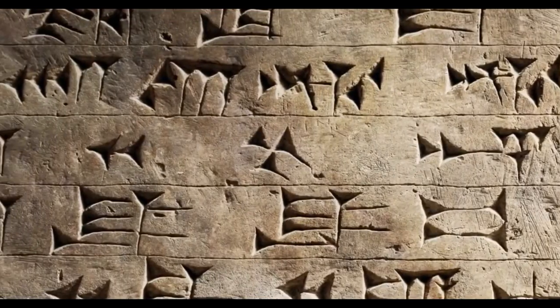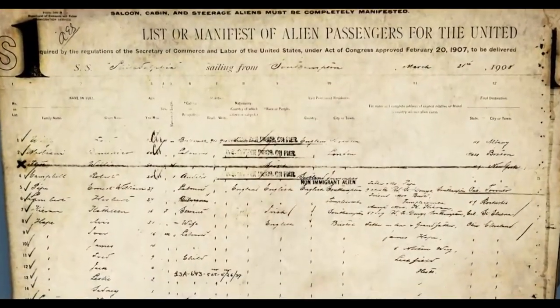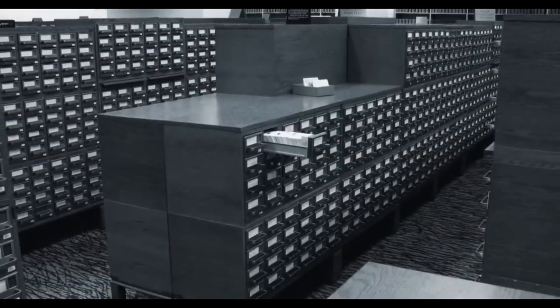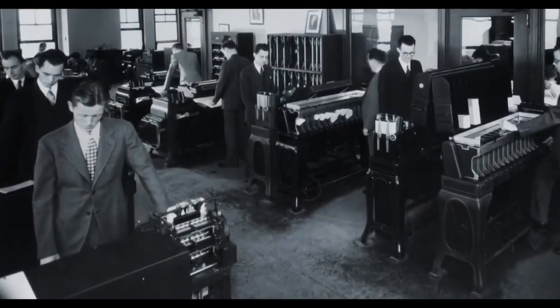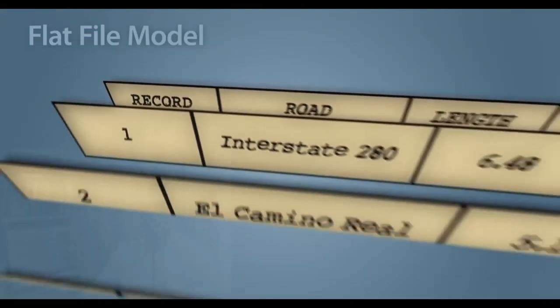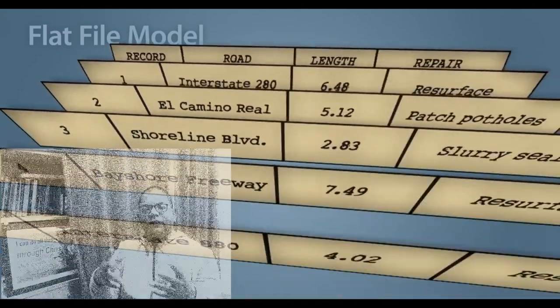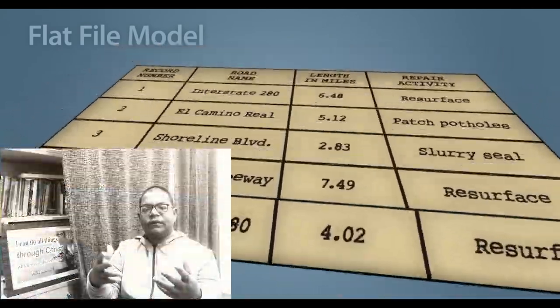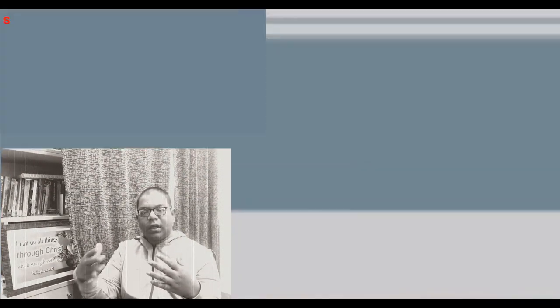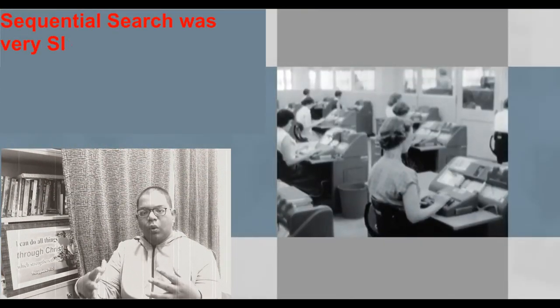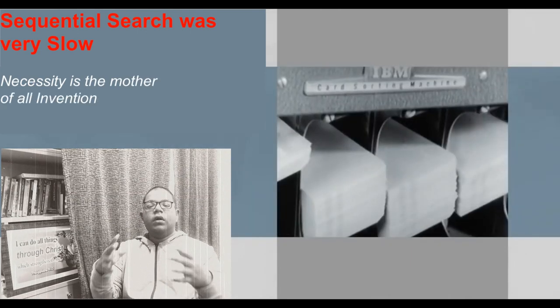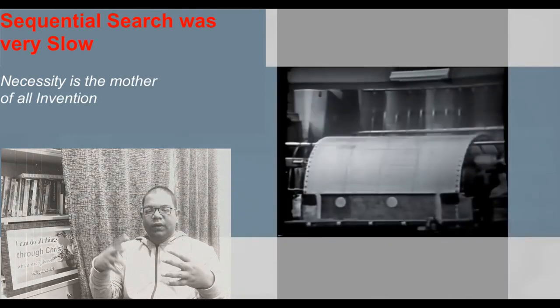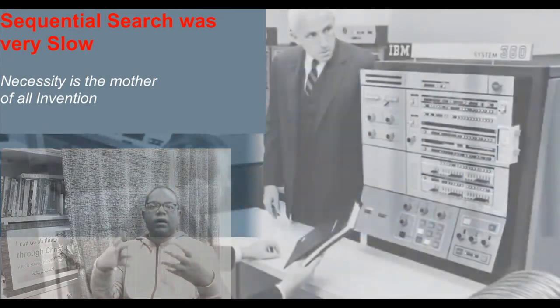When computers were born, they allowed databases to be automated — the management and manipulation of databases became automated. The early computer databases followed a flat file model, which was a simple consecutive list of records. But this format required that computers begin every search at the start of the list and search sequentially, which was a slow way to search and maintain large volumes of records.